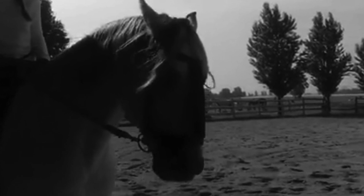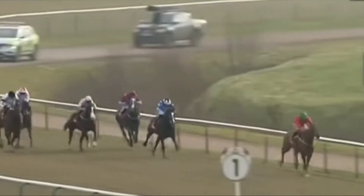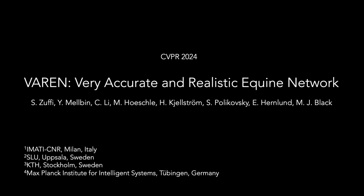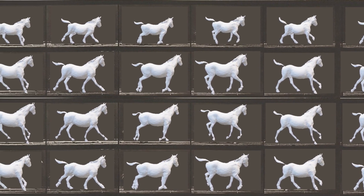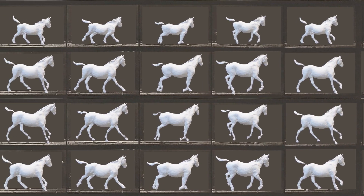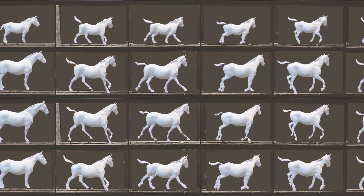They are big animals, but delicate, to the point that the accumulated loads from training and competition frequently result in unrecoverable injuries. We present Varen, a very accurate and realistic equine network — the first articulated 3D generative shape model that can generate highly realistic 3D horses.